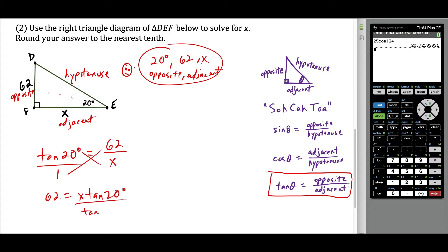So here, we're just going to divide by tangent of 20 degrees. And we'll have our value of x here. So x is going to be equal to 62 over tangent 20. So we have 62 divided by tangent of 20 degrees. And this is going to be 170.3. So x this time around, x is going to equal 170.3.